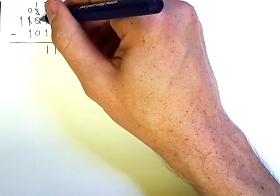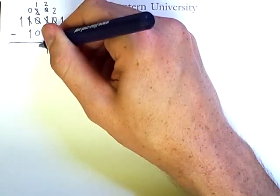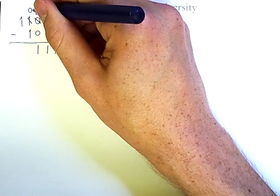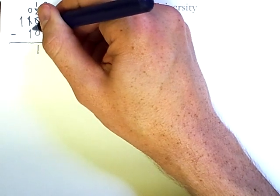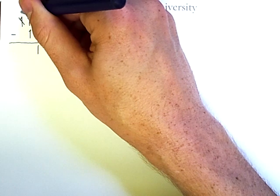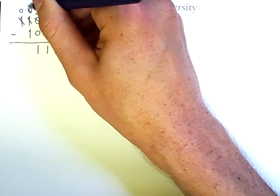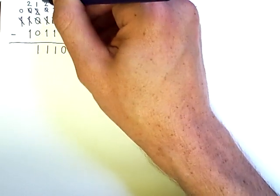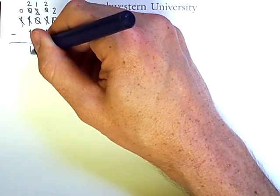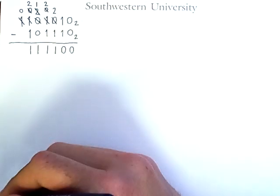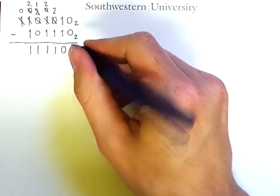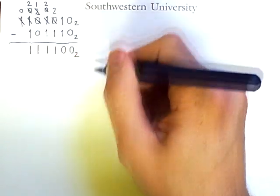In this column now, 1 minus 0 is 1. And we have 0 minus 1, which requires another borrow. This 1 becomes a 0, this 0 is actually a 2, and 2 minus 1 is 1. We have a final result of 1, 1, 1, 1, 0, 0 in binary.